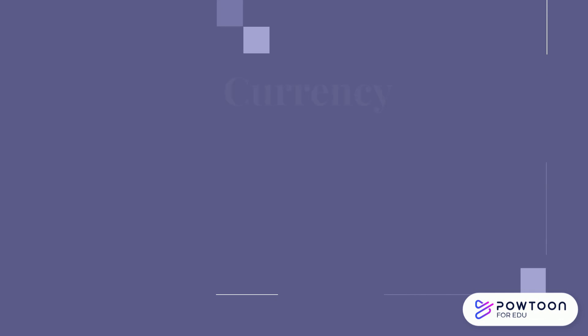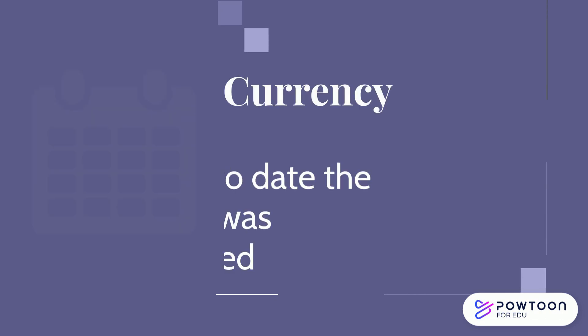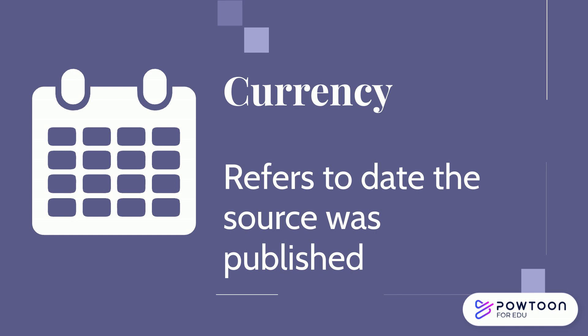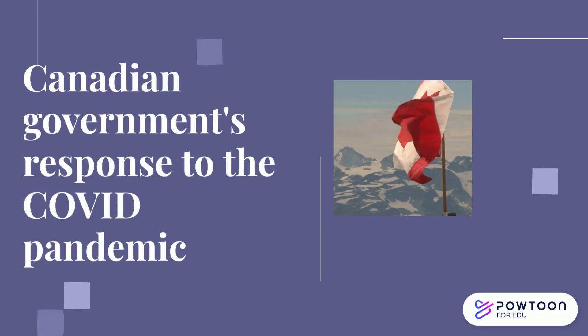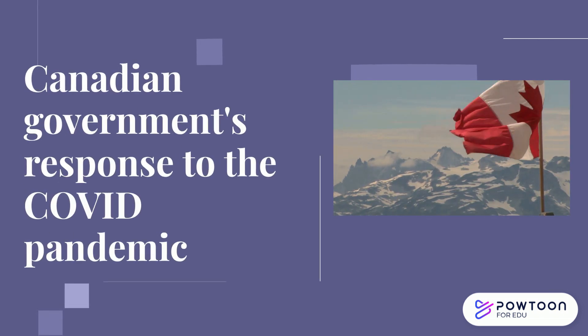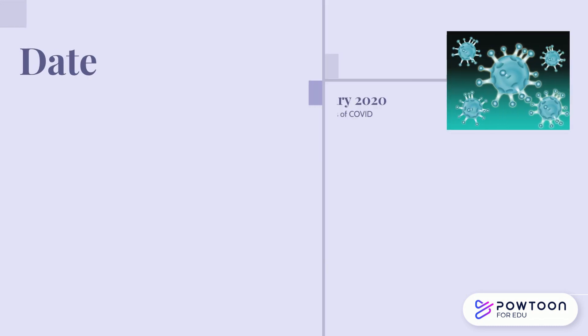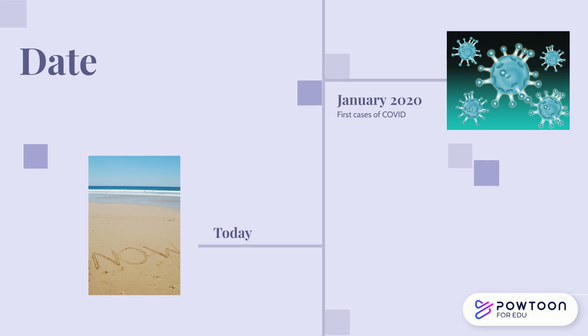When researching, one of the first concepts to consider is currency, which refers to when the information was published and if that publication date meets your information needs. For example, if your research topic was the Canadian government's response to the COVID pandemic, you would want sources published after January 2020, as this is when the first cases of COVID began to be reported in Canada. Anything published prior would not be relevant since the topic did not occur until after January 2020.